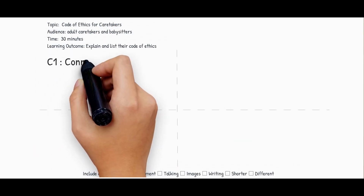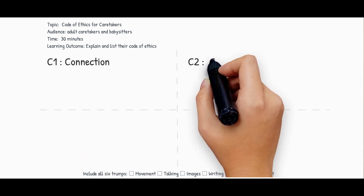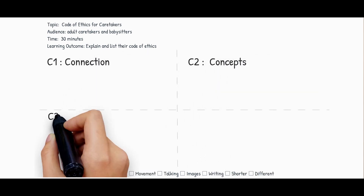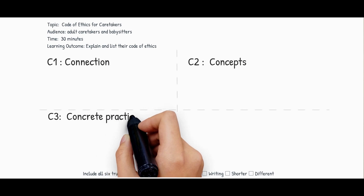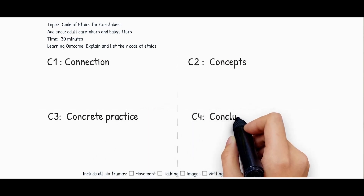In the next quadrant, write down 'concepts.' In the third quadrant, write down 'concrete practice.' And finally, in the last quadrant, write down 'conclusion.'